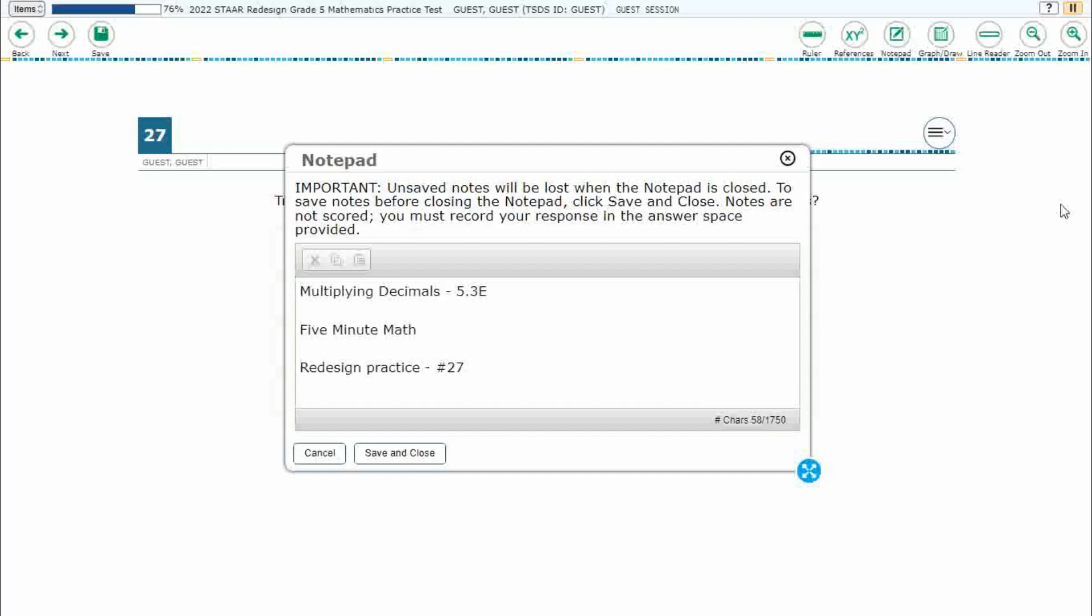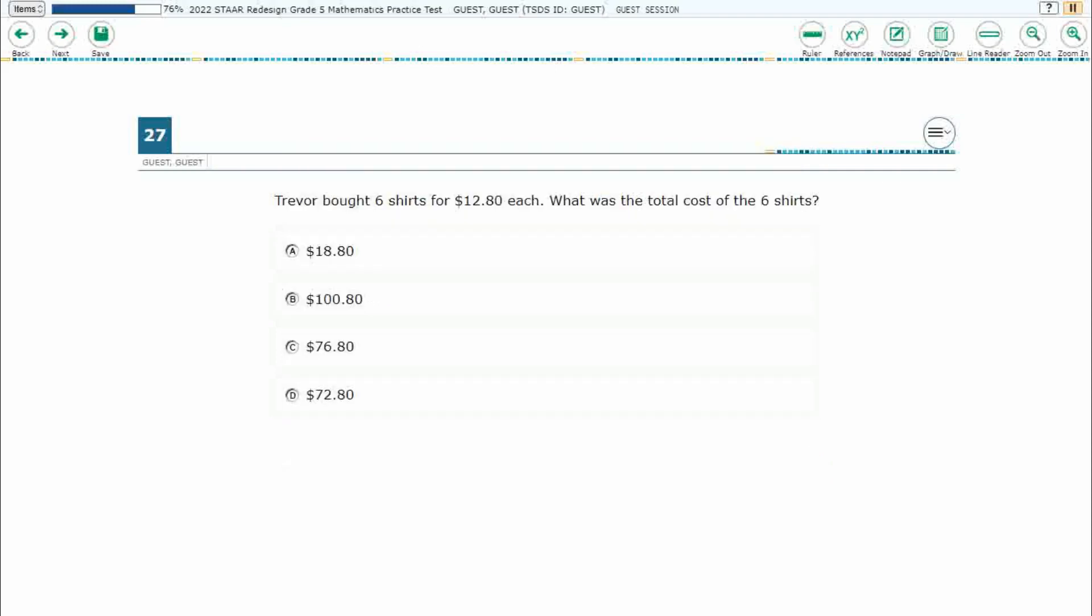Hello and welcome to 5-Minute Math. Today we are looking at the fifth grade concept of multiplying decimals. This is standard 5.3e in the great state of Texas and we are using item number 27 of the redesigned practice online star test.